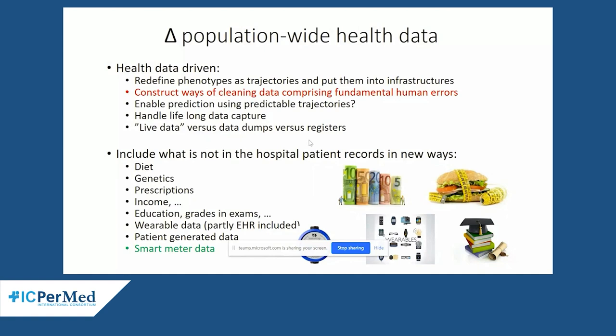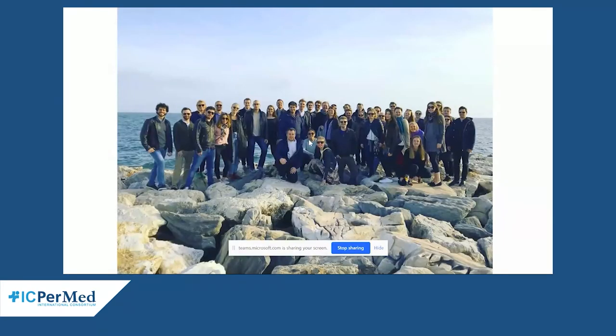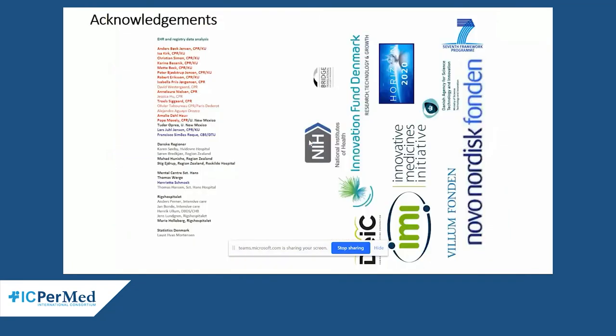We need new ontologies for what disease progression actually is. We have registries in this domain, but working with live data is difficult due to privacy issues — though that would be optimal. COVID-19 showed us how important it is not to wait one or two years to gain access to data. The live data perspective is very important.